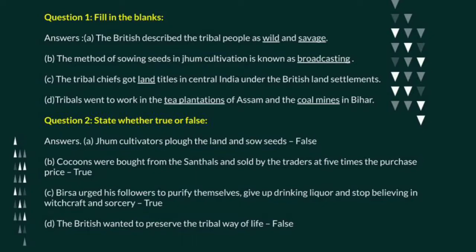Answer c: the tribal chiefs got land titles in Central India under the British land settlements. Answer d: tribals went to work in the tea plantations of Assam and coal mines in Bihar. That's the answer of question number one, fill in the blanks.